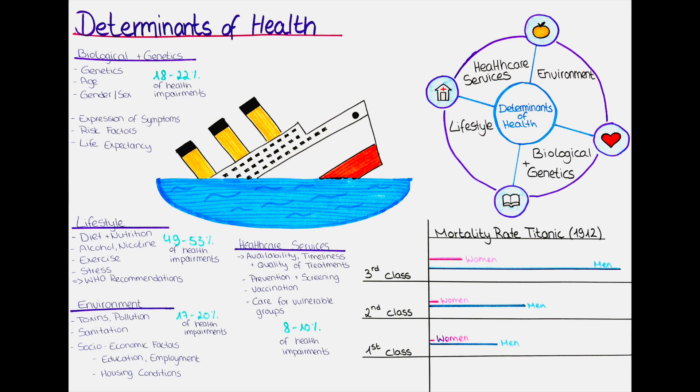How much alcohol intake is recommended? The recommended alcohol intake varies by country and organization, but generally it is recommended that adults consume alcohol in moderation. The WHO defines moderate alcohol consumption as up to 2 standard drinks per day for men and 1 standard drink per day for women. A standard drink is typically defined as 14 g of pure alcohol, equivalent to 355 ml of beer at 5%, 148 ml of wine at 12%, or 44 ml of distilled spirits such as vodka, gin or whiskey at 40%.